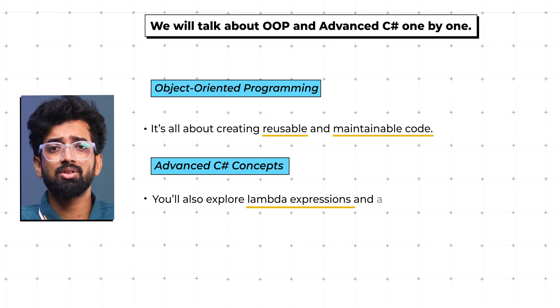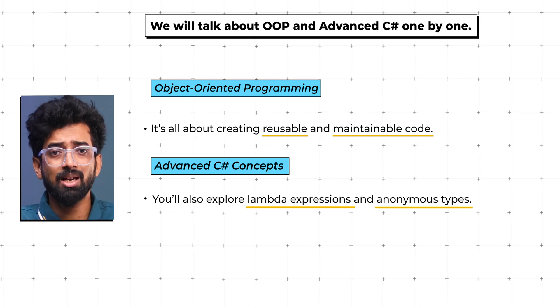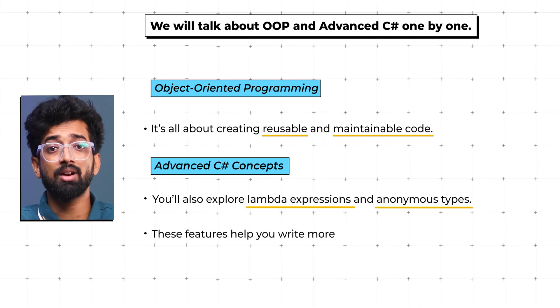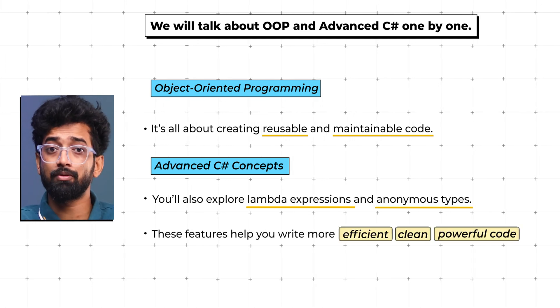Advanced C# concepts: get comfortable with exception handling, abstract classes, interfaces, and generics. You'll also explore lambda expressions and anonymous types. These features help you write more efficient, clean, and powerful code.